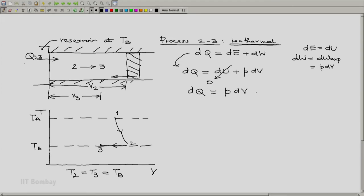Let us get everything in terms of V. We will use the equation of state PV equals mRT. So we will write P equals mRT by V. And this expression then reduces to mRT dV by V. Notice that throughout this process, the temperature is TB. Hence we may as well write TB here.